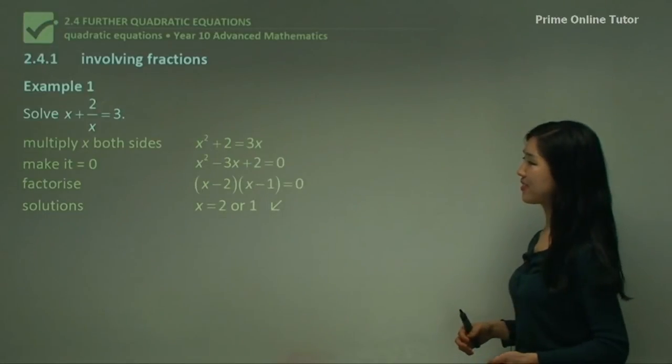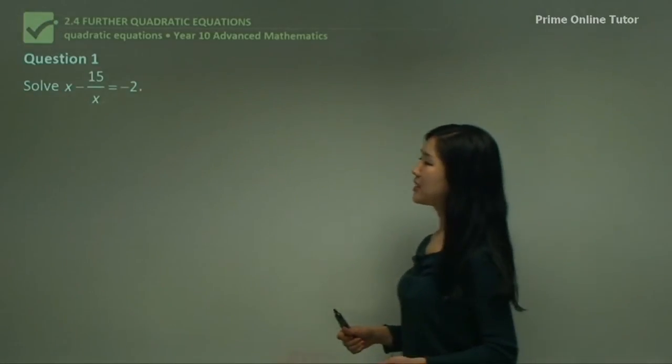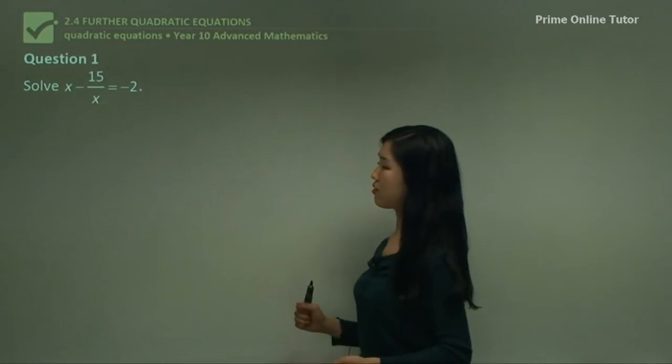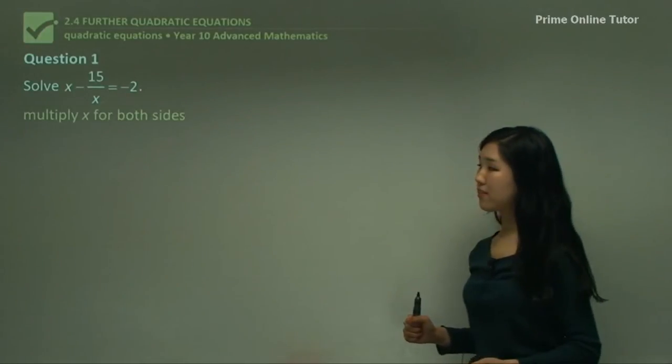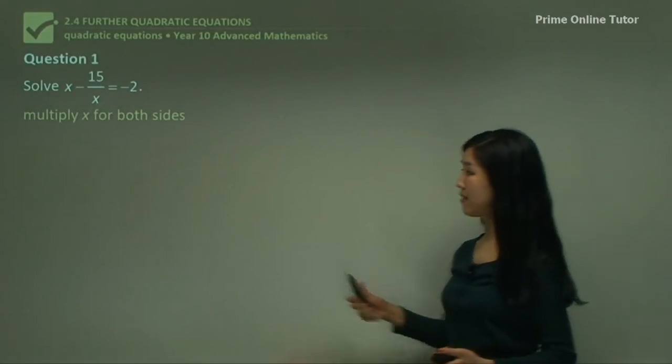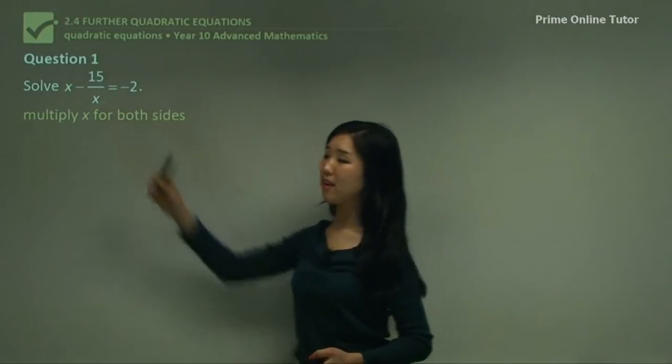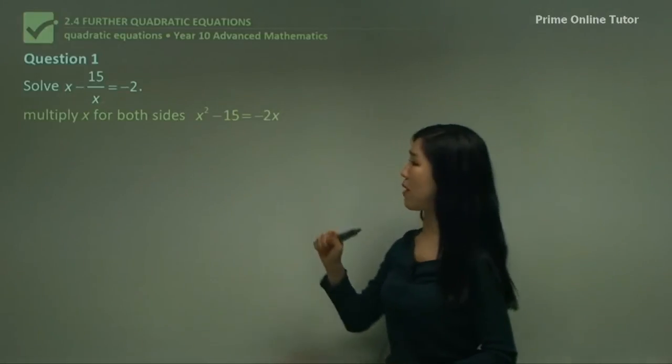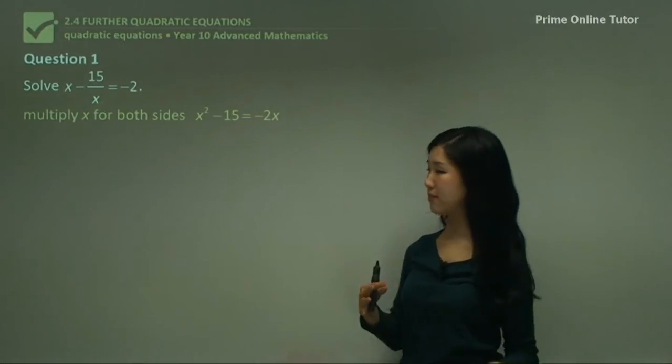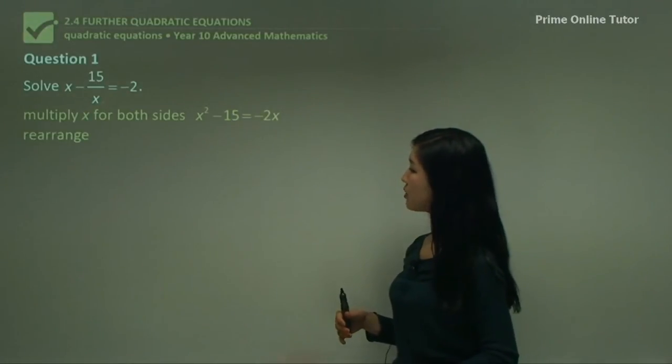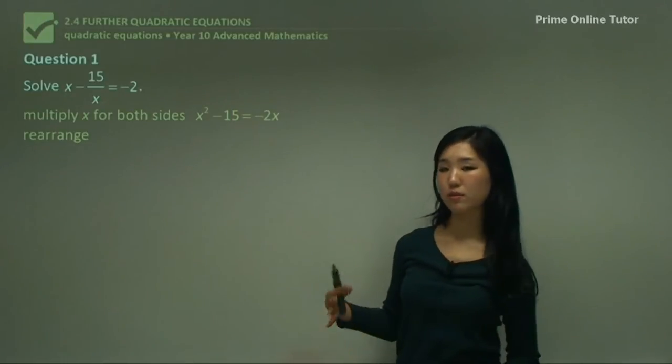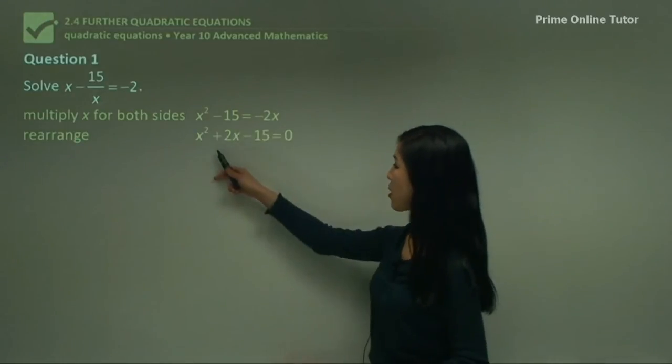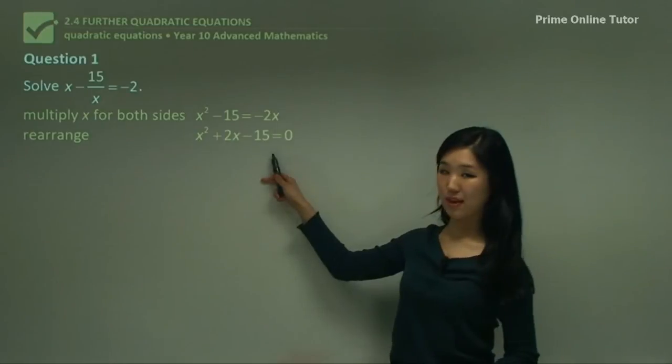Let's try some questions. Question 1. Solve x - 15/x = -2. So firstly, I'm going to multiply x for both sides as the denominator is x. I'll get x² - 15 = -2x after multiplying everything by x. Now rearrange it, move everything onto one side, let it be equal to 0. I'll have x² + 2x - 15 = 0.